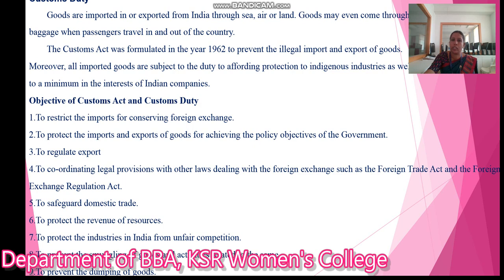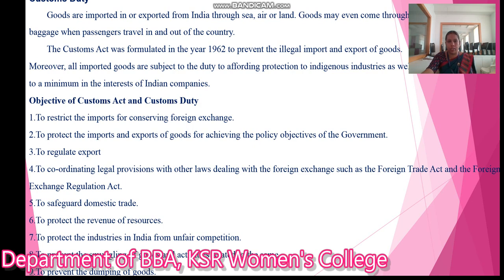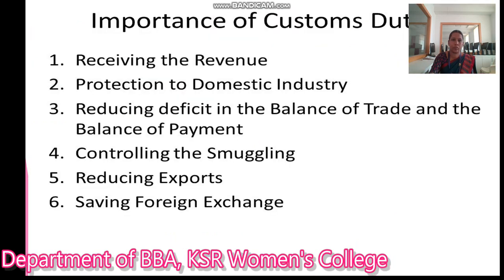The next objective is to safeguard the domestic trade. To protect the revenue resources. To protect the industries in India from unfair competition. To prevent the smuggling of goods and activities related to the same. To prevent the dumping of goods. These are the objectives of Custom Act and Custom Duty.